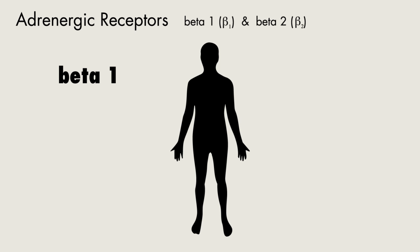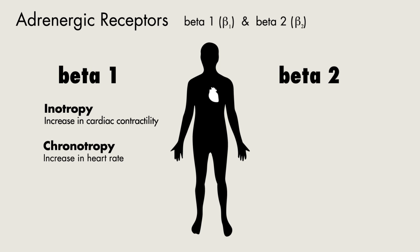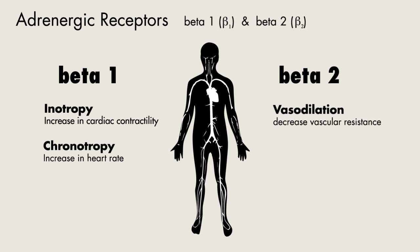Beta-1 receptors are predominantly found on the heart and mediate increases in inotropy, or increases in cardiac contractility, and chronotropy, or increases in heart rate. Beta-2 receptors, which are also predominantly found on vascular walls, cause vasodilation when they are stimulated.